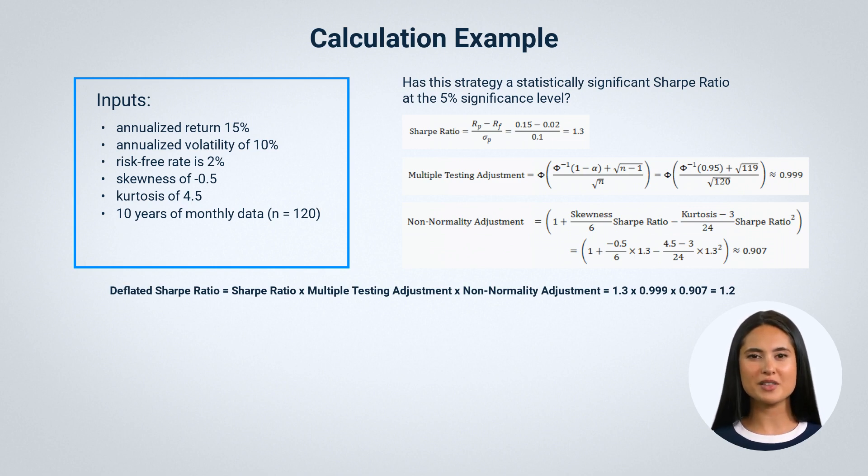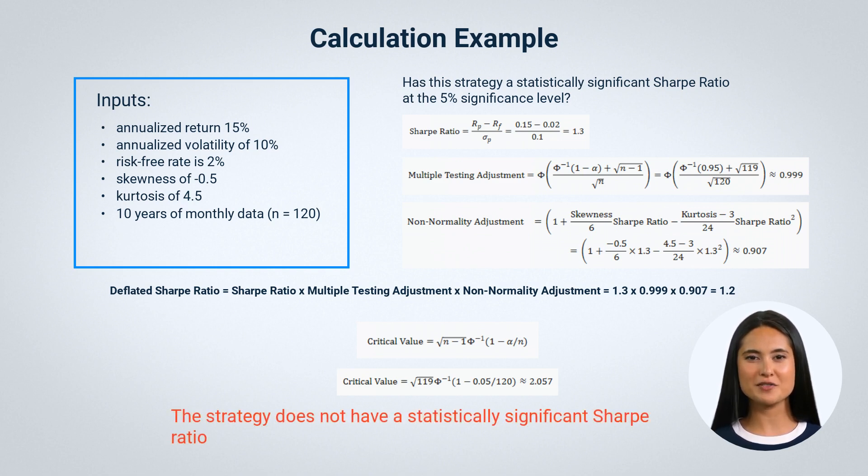The deflated Sharpe ratio is lower than the original Sharpe ratio, which means that the strategy's performance is inflated by multiple testing and non-normality. To test if the deflated Sharpe ratio is statistically significant, we can compare it to a critical value that depends on the significance level and the number of trials. The critical value can be approximated by the following formula. For our example, this gives a critical value of approximately 2.1. Since the deflated Sharpe ratio is lower than the critical value, we cannot reject the null hypothesis that the strategy's performance is due to luck at the 5% significance level. Therefore, we conclude that this strategy does not have a statistically significant Sharpe ratio and we should be cautious about investing in it.